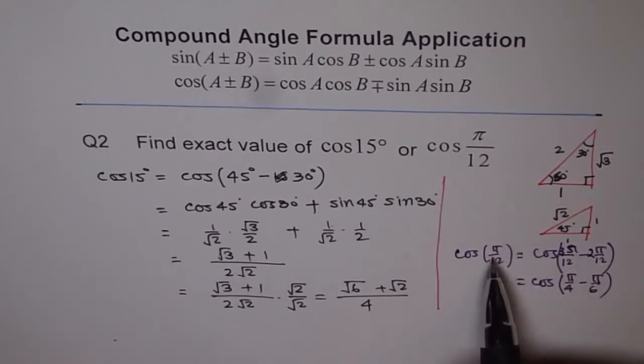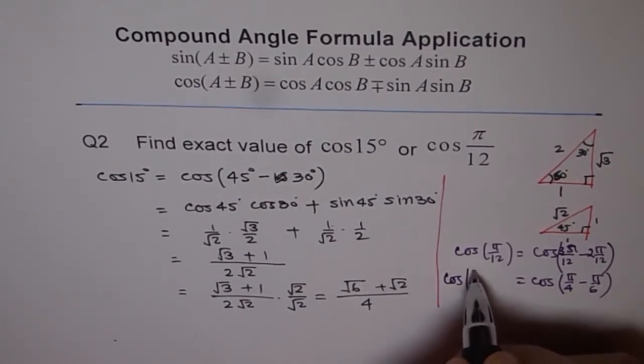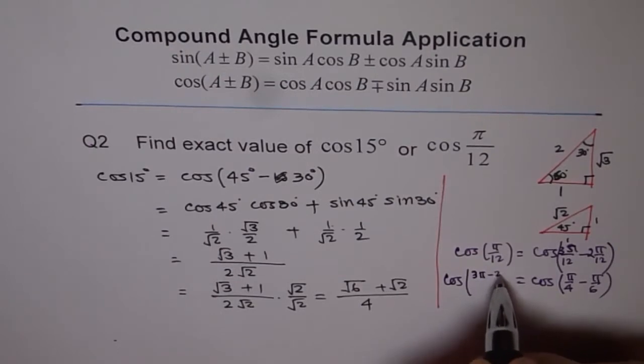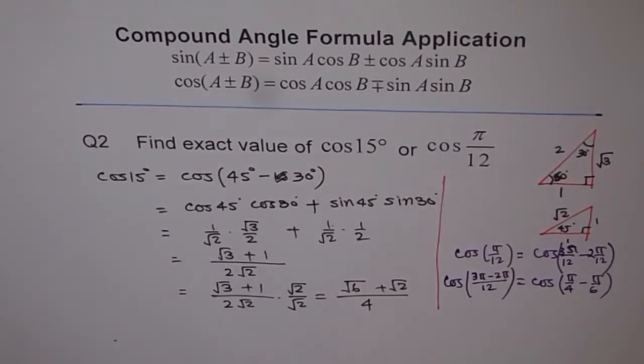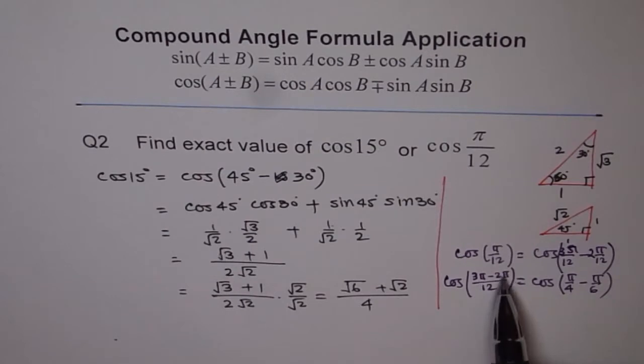That could be written as 3pi minus 2pi. So basically, let me rewrite this as cos of 3pi minus 2pi over 12. That's better. So you can write cos of pi by 12 as cos of 3pi minus 2pi over 12. Now, 3pi over 12 is pi by 4 and 2pi over 12 is pi by 6.